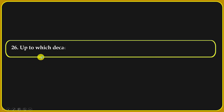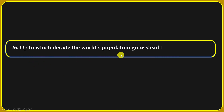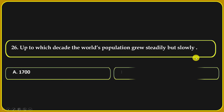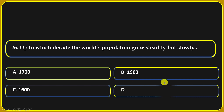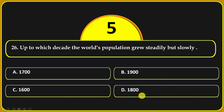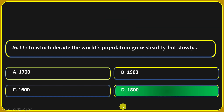Up to which decade did the world population grow steadily but slowly? Options: 1700, 1900, 1600, or 1800. 1800 is the correct answer.